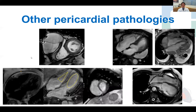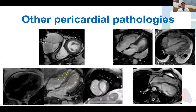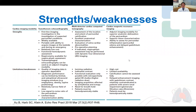MRI is also useful for assessing all the other pericardial pathologies. The top left is an example of a loculated pericardial effusion with RVOT compression. The bottom is an example of constrictive pericarditis with pericardial thickening, conical deformity of the ventricles, and respirophasic septal shift. The top right shows examples of pericardial masses — a pericardial cyst and a pericardial mesothelioma — which can be distinguished using various tissue characterization sequences. The bottom right is an example of congenital absence of the pericardium, with the characteristic leftward shift of the apex.